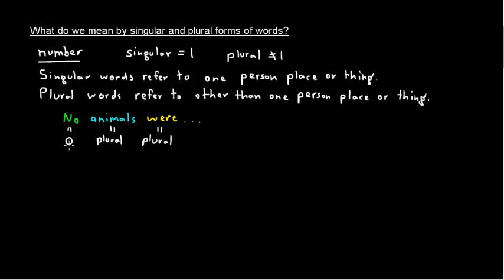and were is a plural word. Okay? Okay? And zero is obviously less than one, but it's not one, so we're okay. Okay?